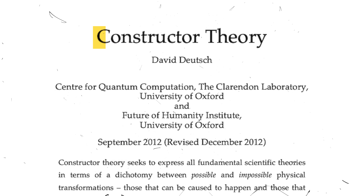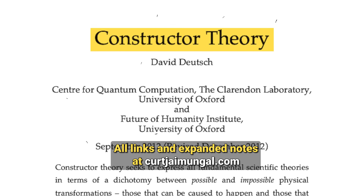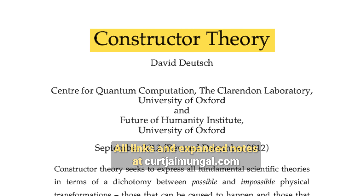But this seems recursive. Are we defining laws by what's physically possible? Okay, and that's defined by what — the laws, or some meta-law? Constructor theory also operates on what's possible versus impossible, but to me that's akin to assuming a law of possibilities, a law of laws.